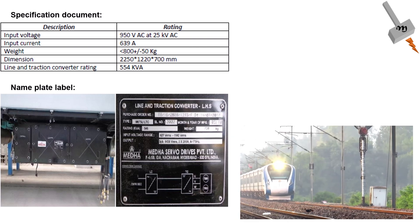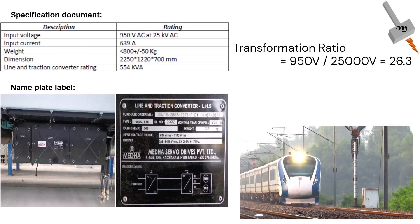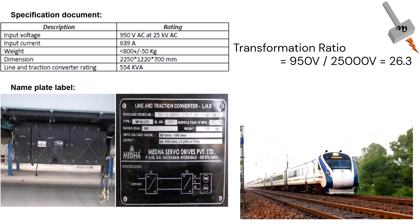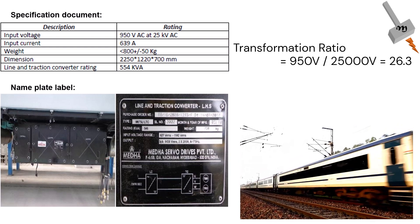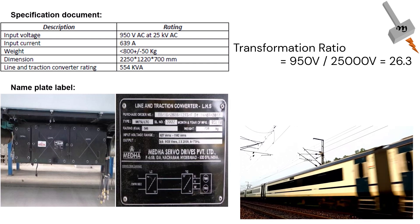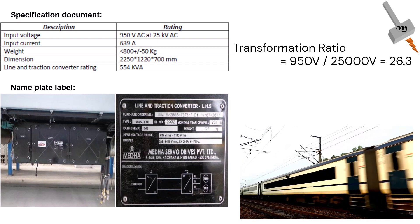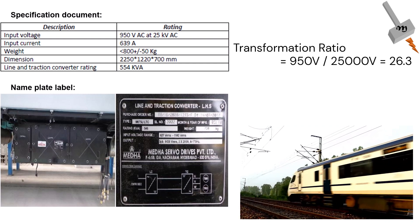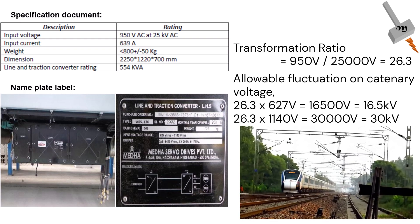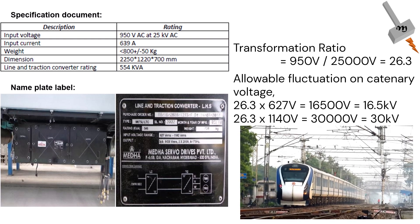Moving ahead, if we apply the transformation ratio on the converter input voltage of 950 volts and standard traction supply voltage of 25 kV, we can find the winding ratio of the transformer is 26.3. If applied to the input voltage range given in the nameplate, which is 627 volts to 1140 volts, we can find the fluctuation in the catenary supply voltage is from 16.5 kV to 30 kV.